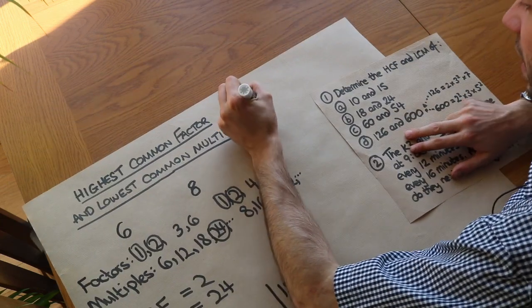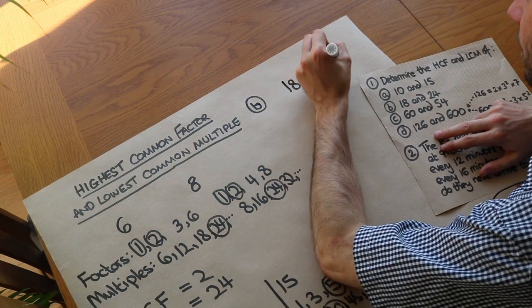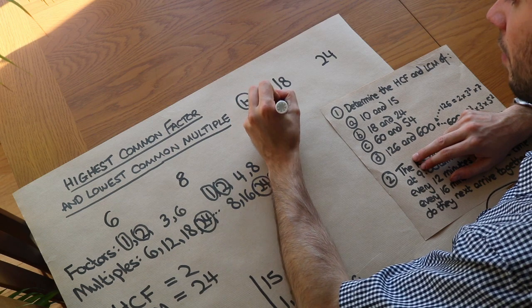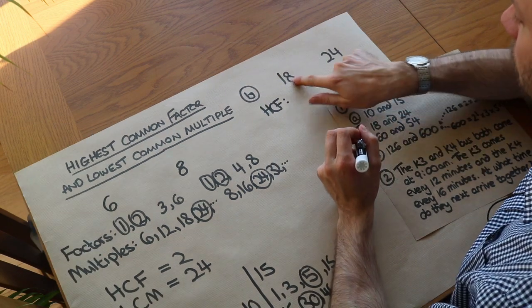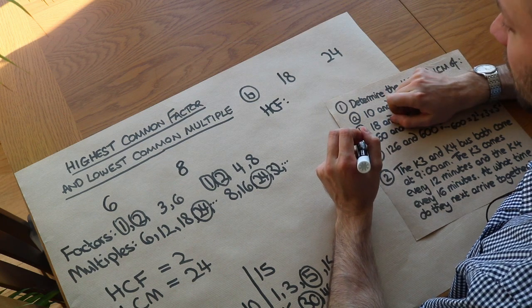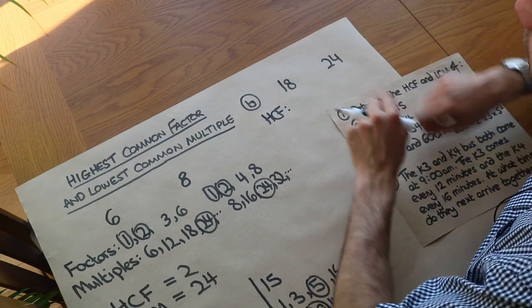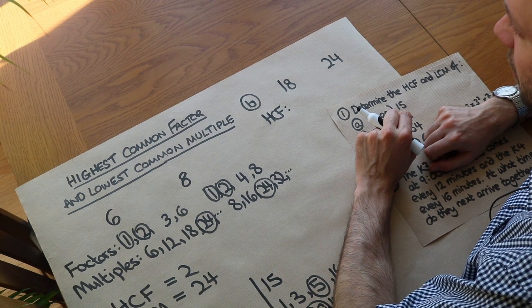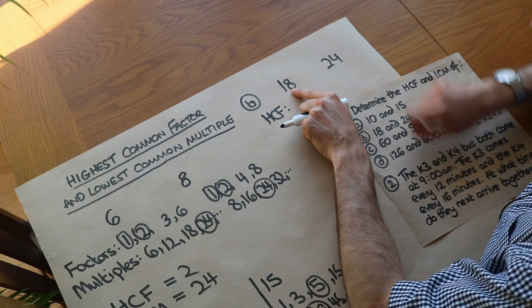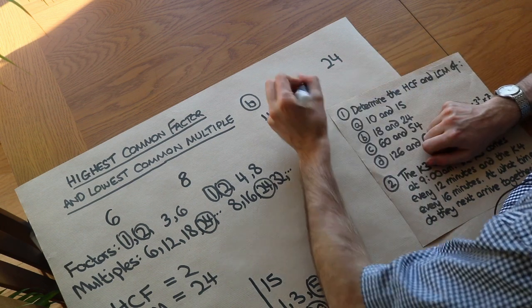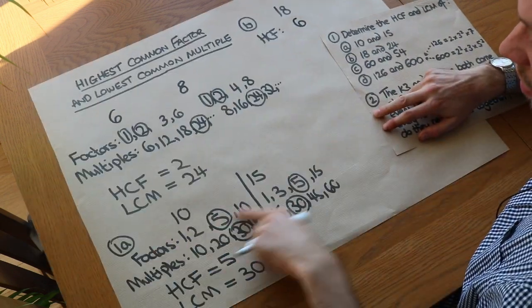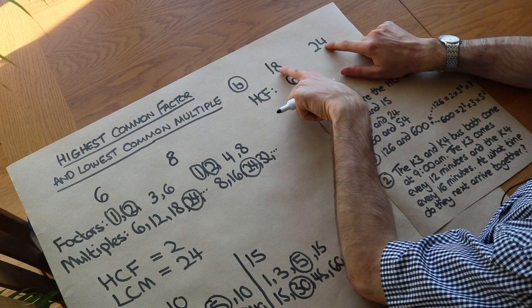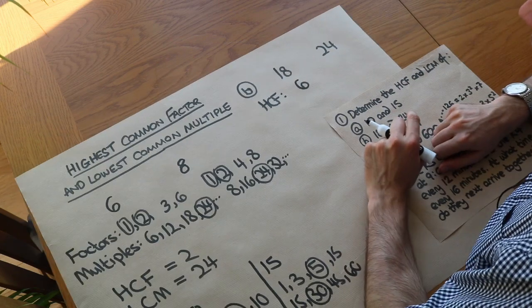Let's say we've got 18 and 24. A quick trick: if we're trying to find the highest common factor, whatever it is must also be a factor of the difference between the two numbers. The difference between 18 and 24 is 6. So whatever the highest common factor is must be a factor of 6. Well, 6 itself is a factor of 18 and of 24, so the HCF is just 6. That's a neat little trick — the highest common factor goes into the difference of the two numbers.